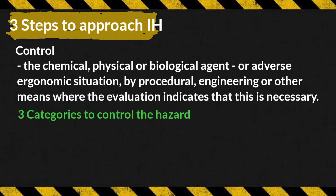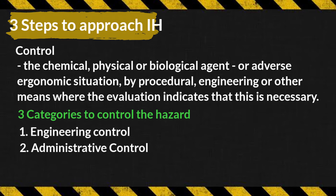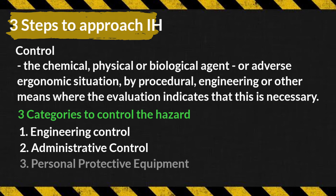We have three categories to control hazards. First is engineering control — to eliminate or reduce the hazard through initial design specifications, substitution, isolation, ventilation, and change of process. Second is administrative control — to control employees' exposure through scheduled reduced work hours, increased breaks, standard operating procedures, isolation, medical exams, and workplace modifications.